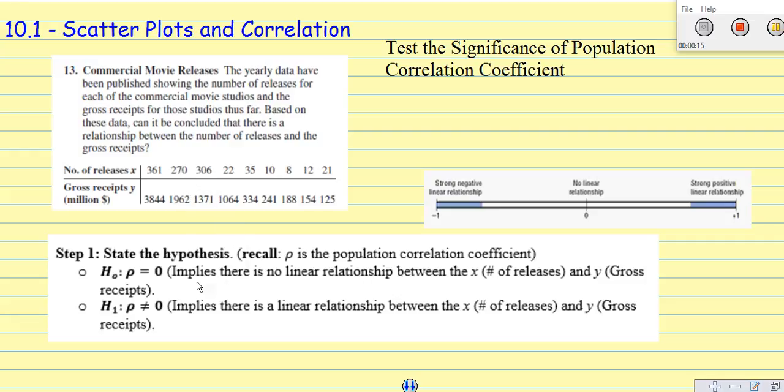Our null hypothesis will be to imply there's no linear relationship, and so we'll do that by stating that rho, which is the population correlation coefficient, is equal to zero. Recall what correlation coefficient means - if you have a zero for your correlation coefficient, that means you have no linear relationship. Our alternative hypothesis would be that rho is not equal to zero, which will establish that there is a linear relationship.